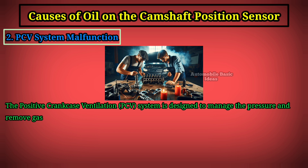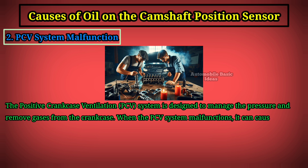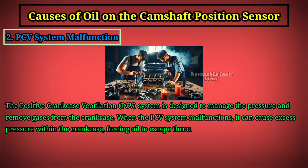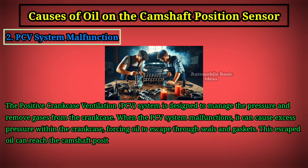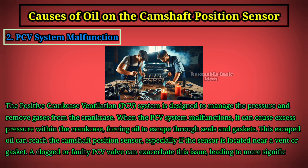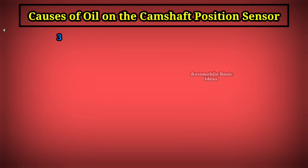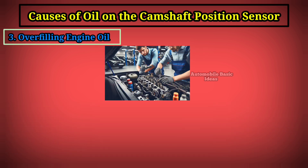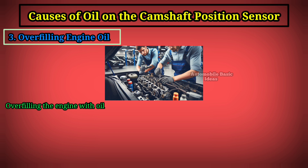The positive crankcase ventilation (PCV) system is designed to manage pressure and remove gases from the crankcase. When the PCV system malfunctions, it can cause excess pressure within the crankcase, forcing oil to escape through seals and gaskets. This escaped oil can reach the camshaft position sensor, especially if the sensor is located near a vent or gasket. A clogged or faulty PCV valve can exacerbate this issue.